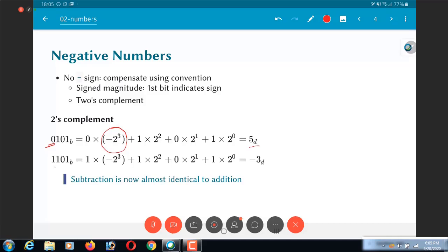But now what if it was 1101? Now that 1×(-2³) essentially ensures that, because 2³ is guaranteed to be greater than whatever sum you can come up with after that, it means that 1×(-2³) is going to ensure that the final result is negative. In this case, 1×(-2³) plus the rest of it gives us -3 as the value.